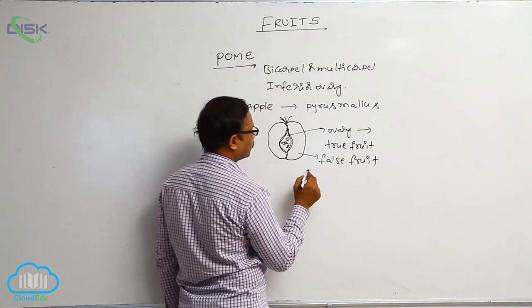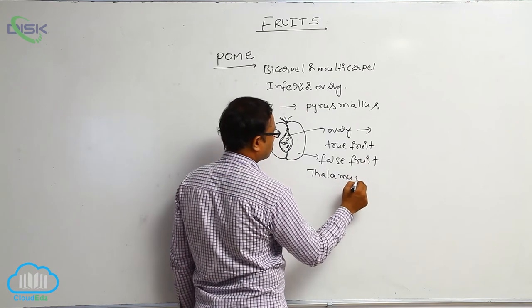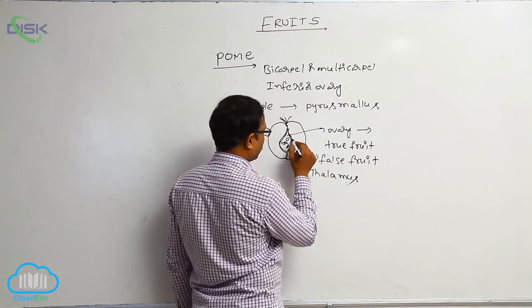This false fruit is also known as thalamus. This true fruit is known as endocarp.